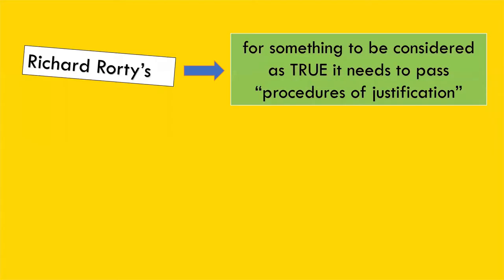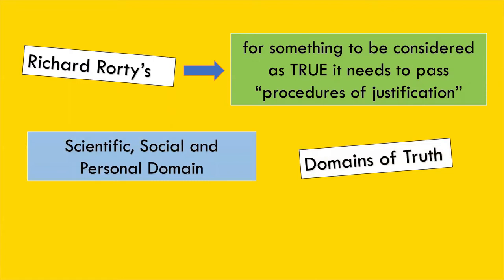In the previous discussion, we learned that for something to be considered as true, it needs to pass procedures of justification. We've also learned that truth has three domains: namely, the scientific, social, and personal domain.